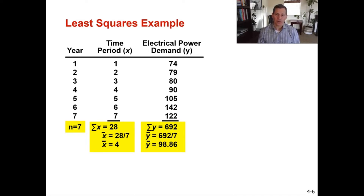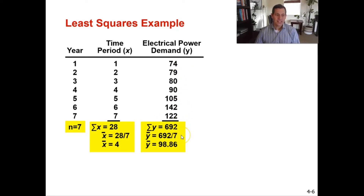Next, we calculate y-bar, the average of the y values. Take 74 plus 79 plus 80 plus 90 and work through all values — the sum equals 692. Dividing 692 by n of seven gives you a y-bar of 98.86. So now you have your n of seven, your x-bar of four, and your y-bar of 98.86.